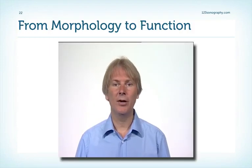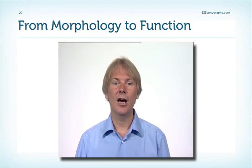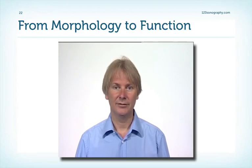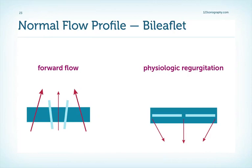The superb image quality of modern echo machines gives us a lot of morphologic and functional information about prosthetic valves. Up front, I would like to show you the typical flow profiles of the various prosthetic valves. First, the bi-leaflet valves: remember, we have three openings — two large and one small — so the inflow will show three jets. When the bi-leaflet valve closes, we have two types of physiologic regurgitation: first, the closing volume, where at the moment the leaflets close a bit of blood is pushed backwards, and then we have a bit of regurgitation at the rim or at the hinges of the leaflets.